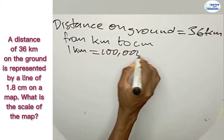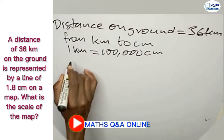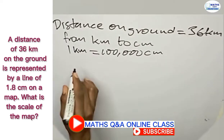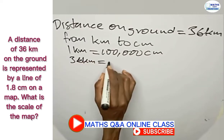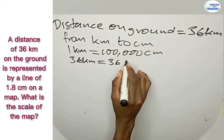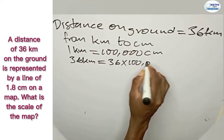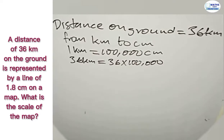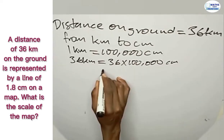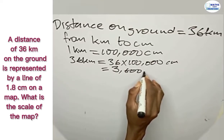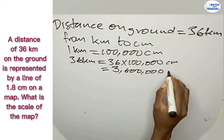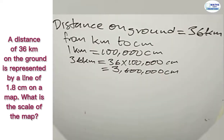100,000 centimeters. Therefore, to convert 36 kilometers, we multiply 36 by 100,000 centimeters, and this gives us 3,600,000 centimeters. Now the distance on the map was also given.